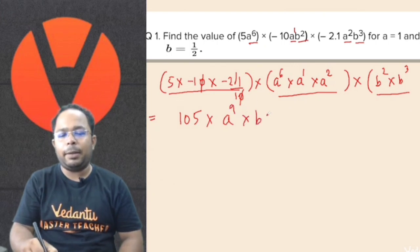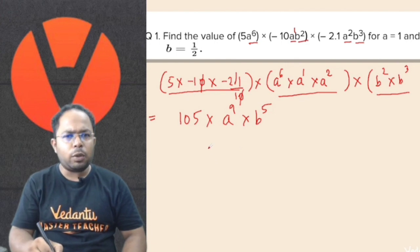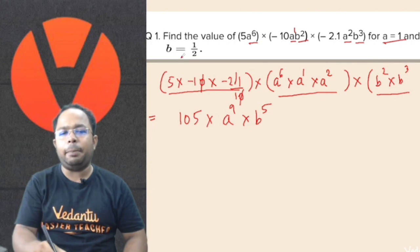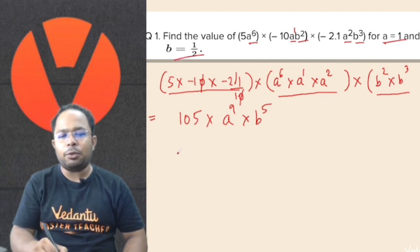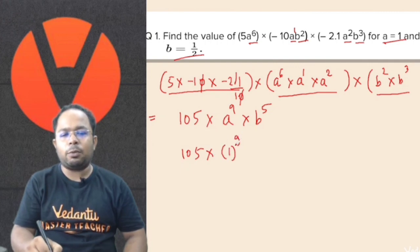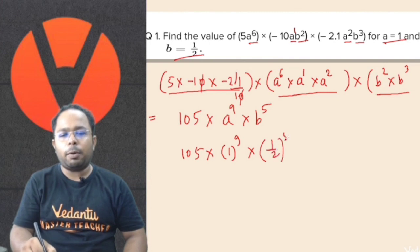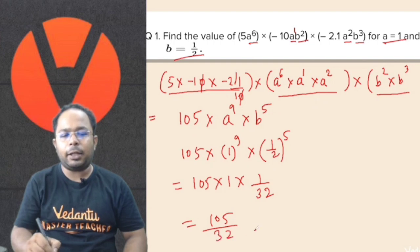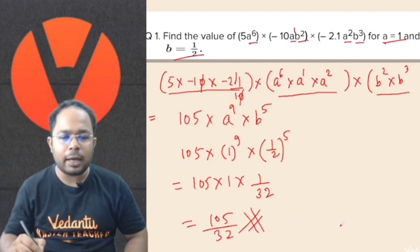For the exponents: 6 plus 1 plus 2 is 9 for a, and b to the power 2 plus 3 is 5. Now we put the values of a and b. Putting a equal to 1: 1 to the power 9 is 1. And b equal to 1 by 2: 1 by 2 to the power 5 is 1 by 32. So 105 into 1 into 1 by 32 gives us 105 by 32 as the right answer.